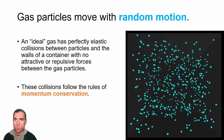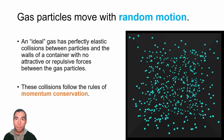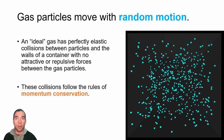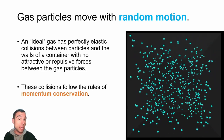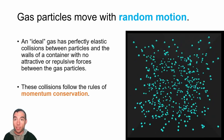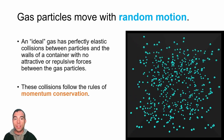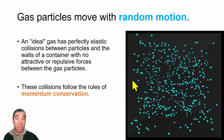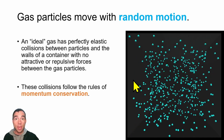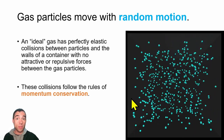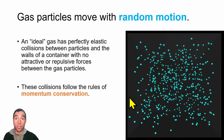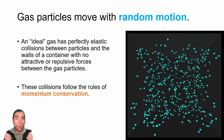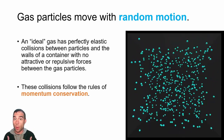Gas particles move with random motion — they bumble about a container, bumping into each other and into the walls. We're going to talk about ideal gases, which means collisions between the gas particles and the walls are perfectly elastic. That means we can use energy conservation and momentum conservation to describe those collisions. Ideal gases also don't consider any attraction or repulsion between individual particles.